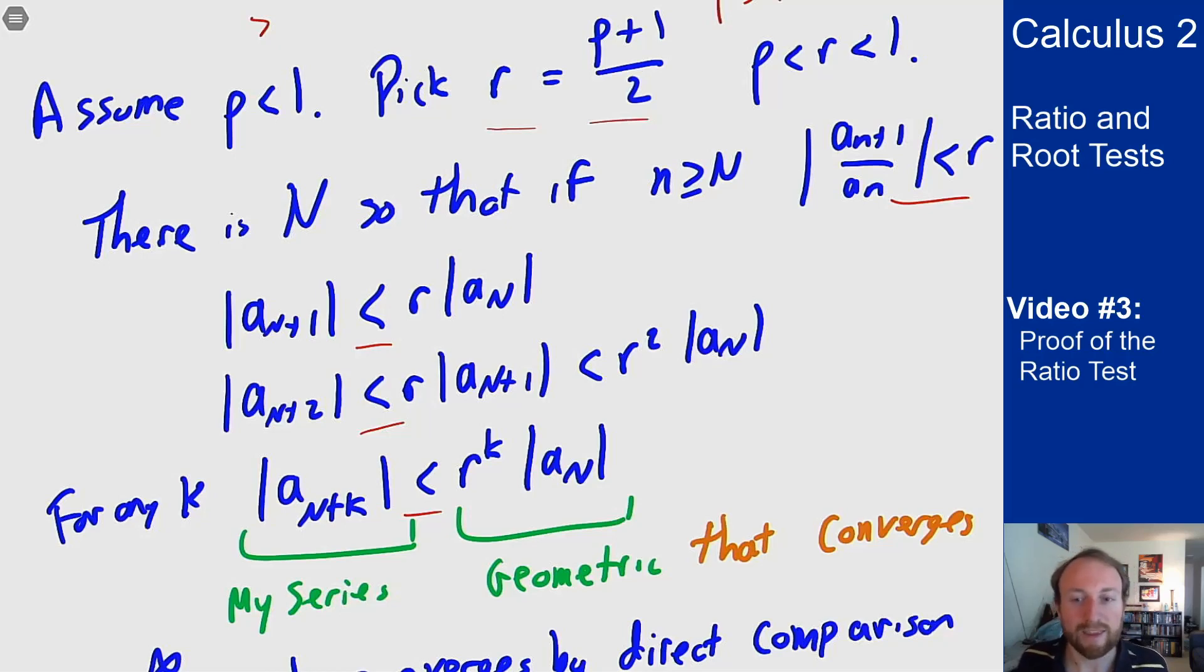You can also kind of see why the equals one case doesn't work here, because I don't know if I'm bigger or smaller or what happens if I'm equal to one. I have nothing I can do with this. So that's why you get convergence for less than one, divergence for greater than one, and an inconclusive test for one, because you can't really say much more if your limit here is one.